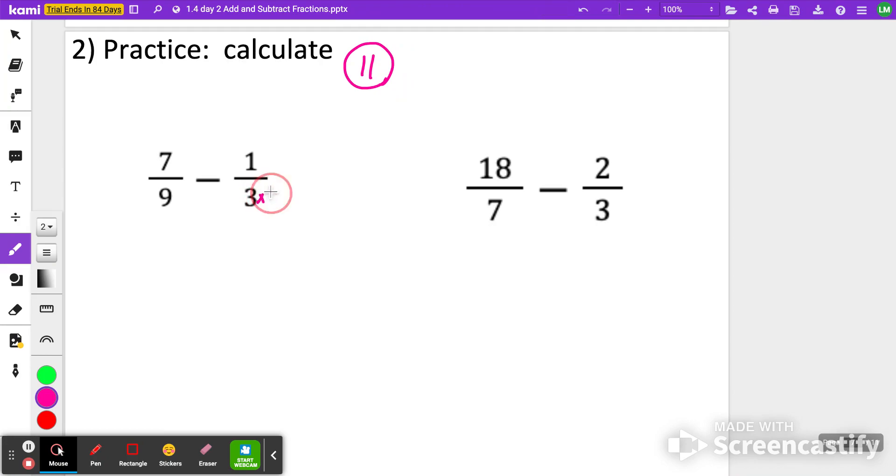So the second one, I only have to change to a 9 because that first one already has that 9. So 7 ninths is good, and then 1 third is just going to change to 3 ninths. Here, I'm subtracting, so 7 minus 3 is 4, keeping that bottom number the same to get 4 ninths.